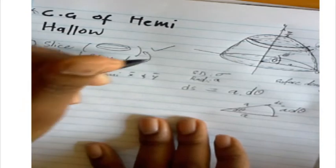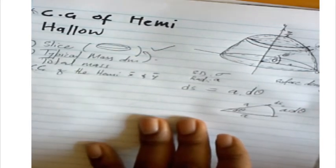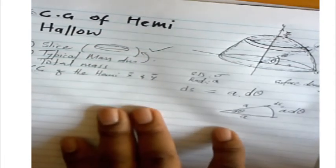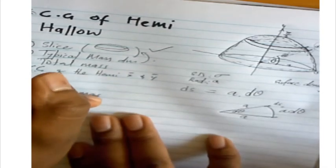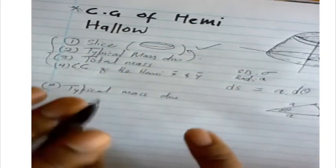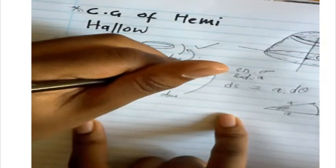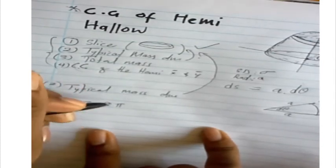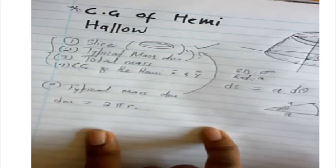In step two, we find the typical mass dm. dm equals the surface area of our slice times the surface density. The surface area of the slice is 2πr times the thickness ds. The radius r of the slice equals a cos θ (the adjacent side), so dm = 2π(a cos θ)(surface density)(ds) = 2π a² cos θ dθ × surface density.